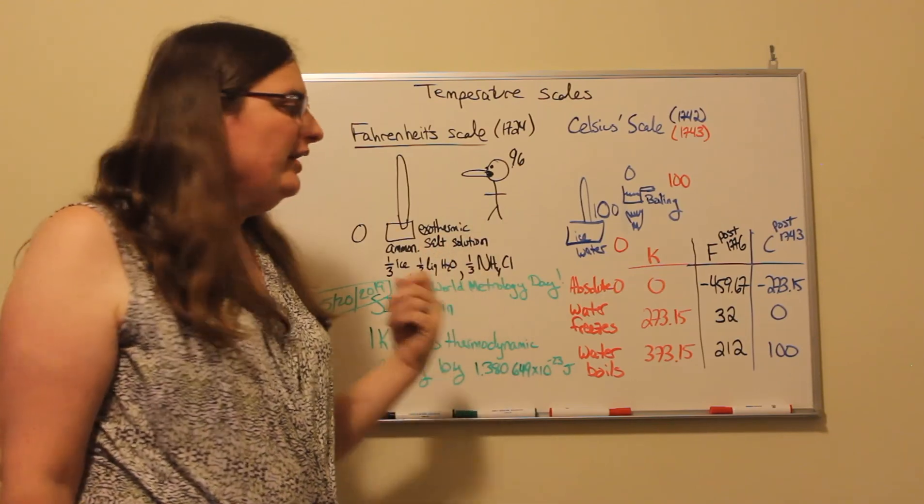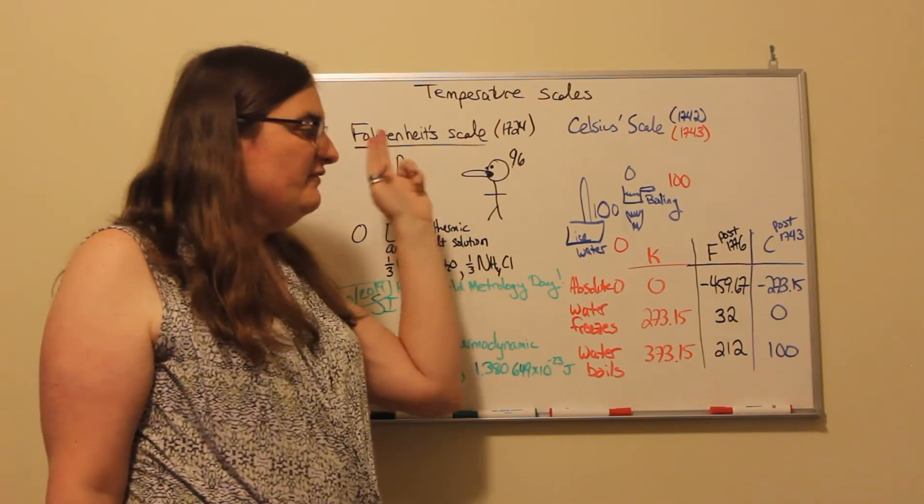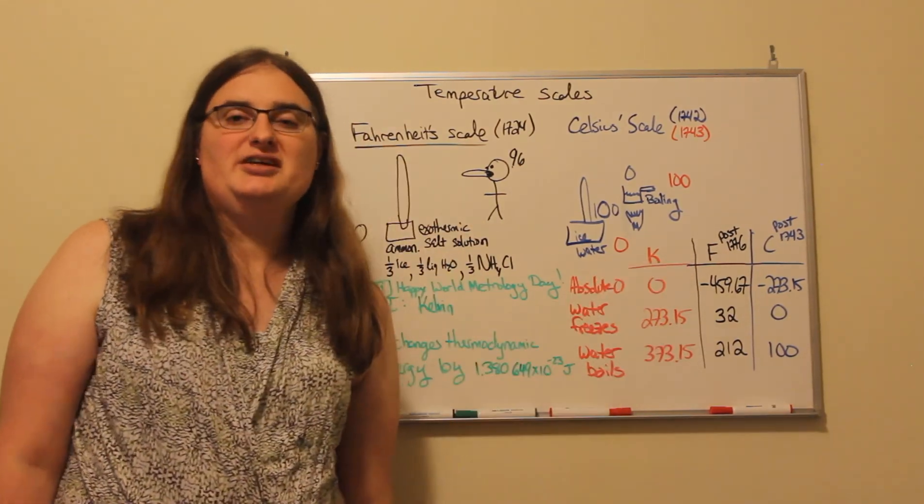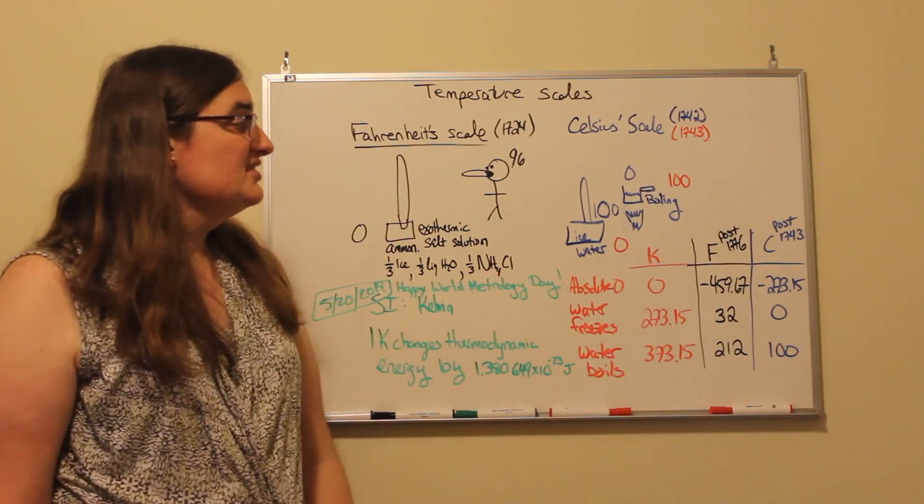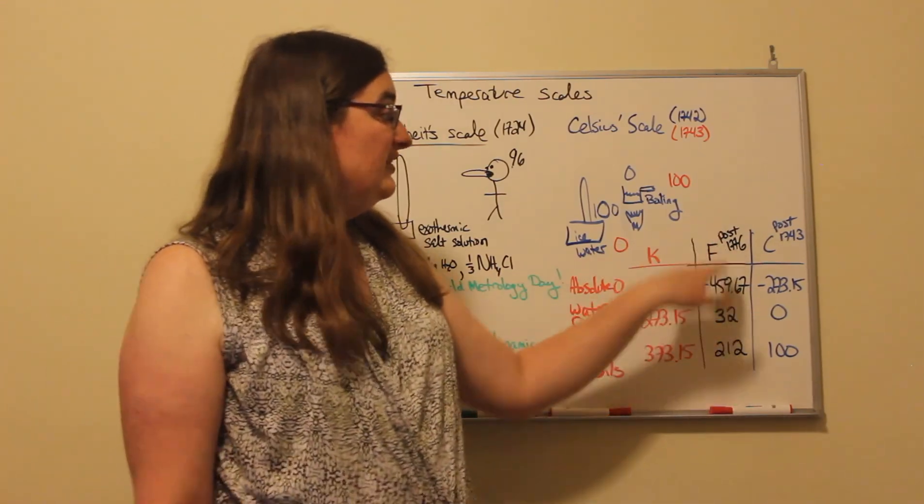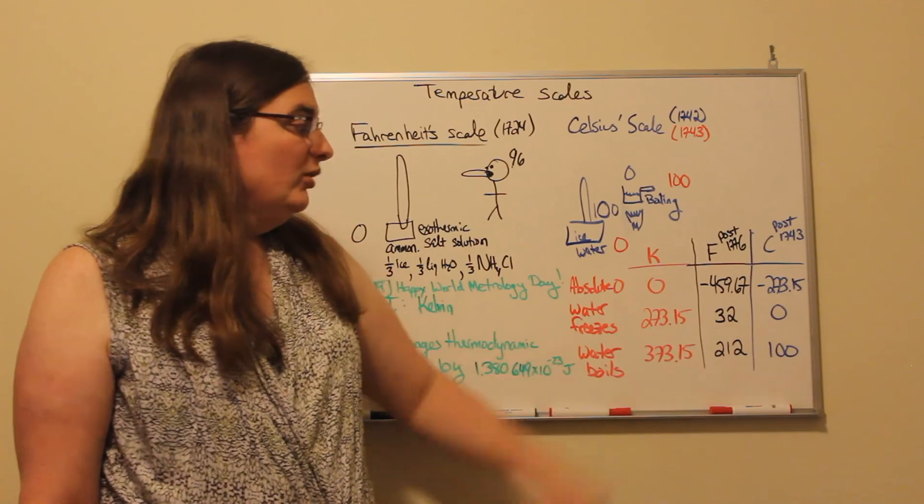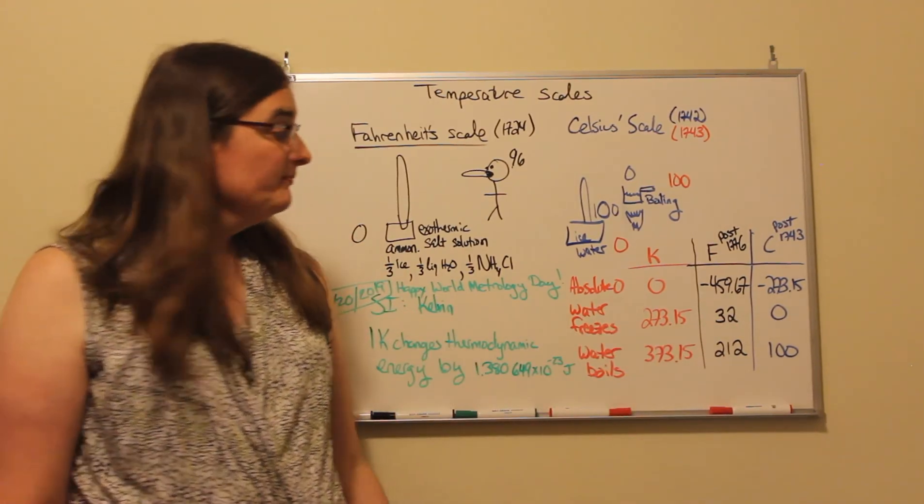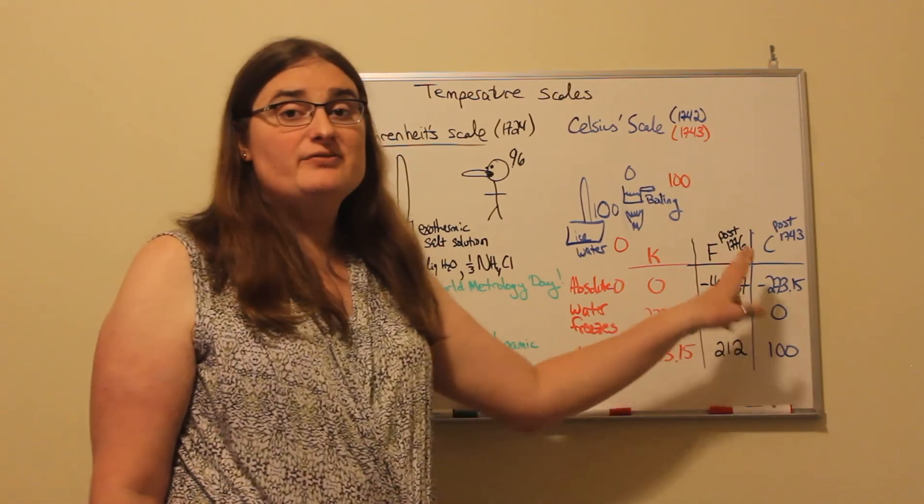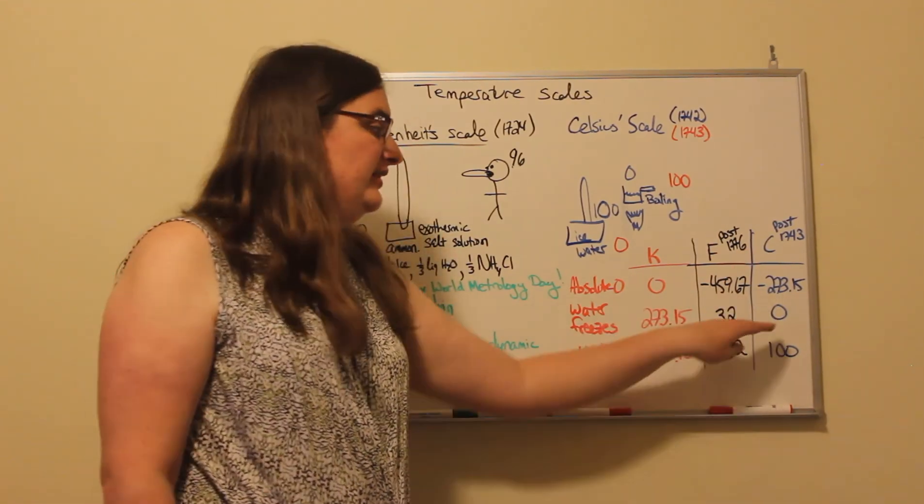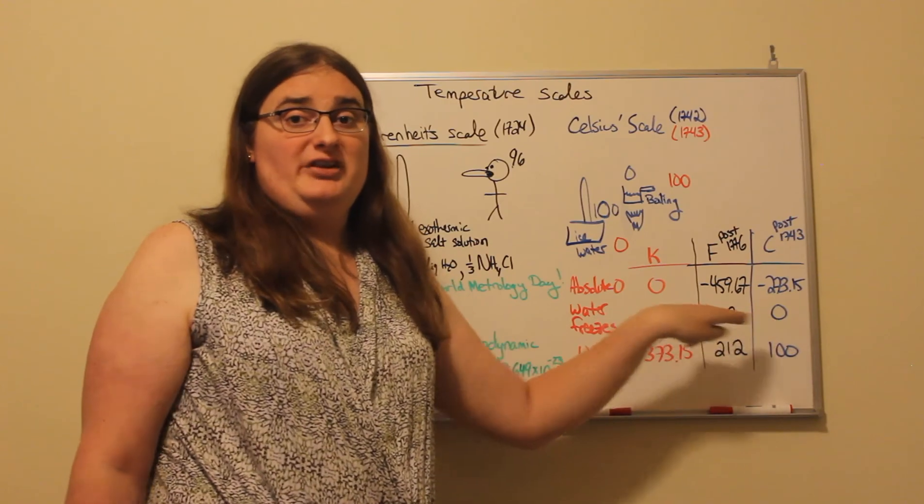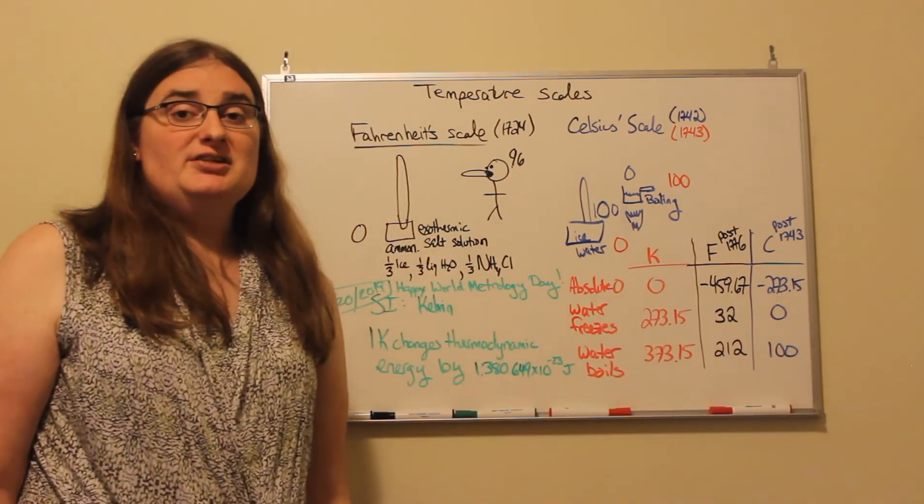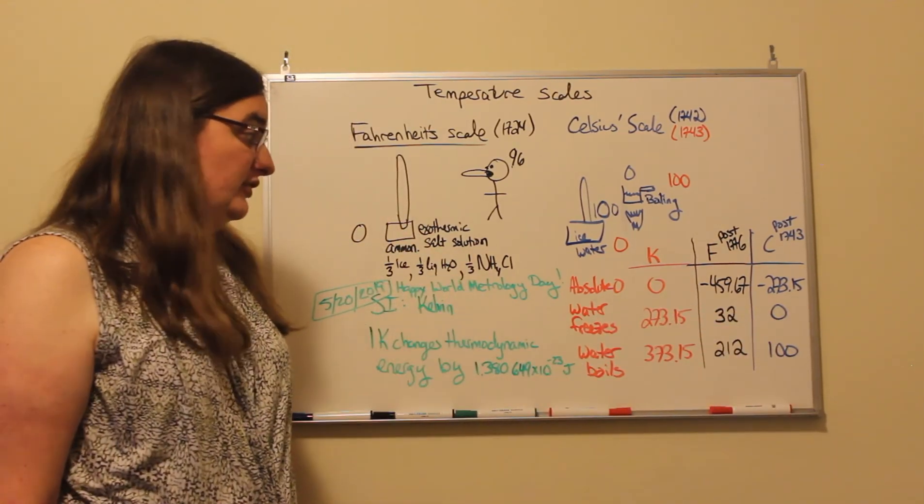But at 212, it gave you 180 Fahrenheit for every 100 Celsius. So in 1776, we redefined the Fahrenheit scale to make water freeze at 32 Fahrenheit and water boil at 212 Fahrenheit. So there are 9 Fahrenheit for every 5 Celsius. You just have to account for the offset of the freezing point of water if you do a conversion.